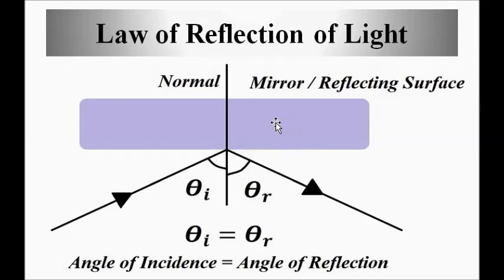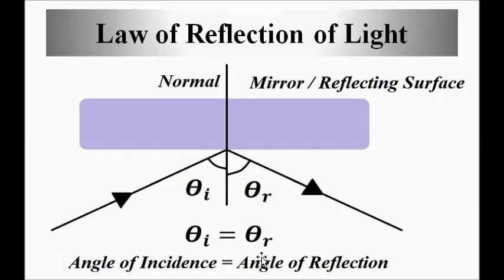For example, if a ray of light strikes a polished reflecting surface such as a mirror, the angle of incidence is the angle at which it strikes the mirror measured with respect to a perpendicular drawn at the point of incidence, and the angle of reflection is again measured with respect to the normal. As per the law of reflection, the angle of incidence equals the angle of reflection. This law will be used extensively when we discuss optoelectronic systems.